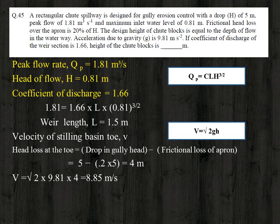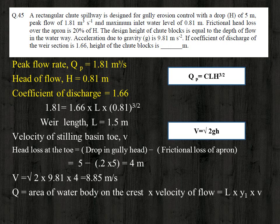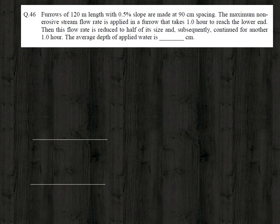Using the continuity equation Q = A × v, where A is the flow area on the crest, the area can be expressed as weir length × depth of flow. With all other values known, the only unknown is the depth of flow y1. Substituting the values, we get y1 = 0.136 meter. Since the chute block height equals y1, the answer is 0.136 meter.